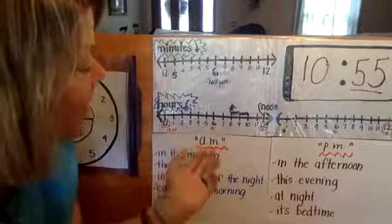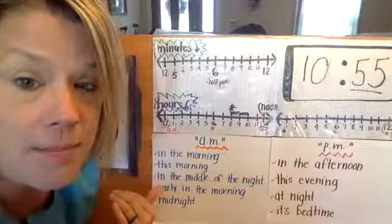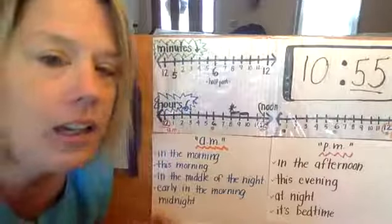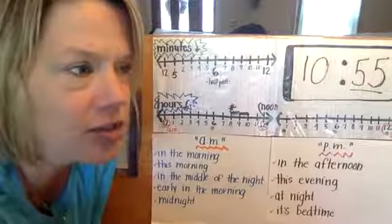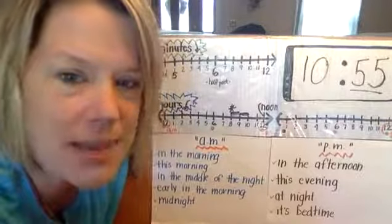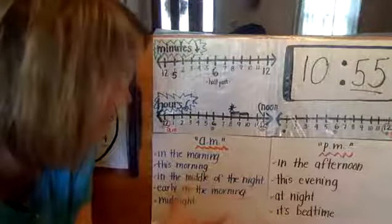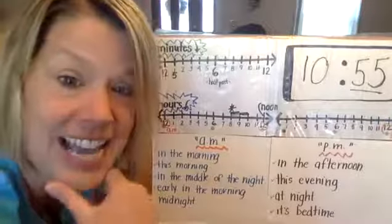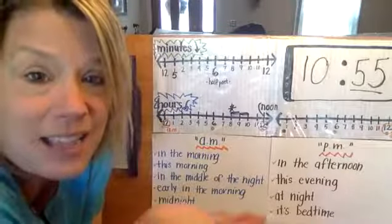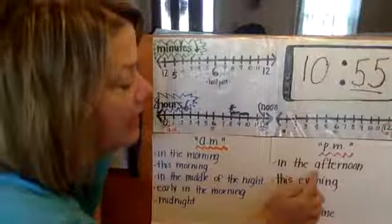So, if we're talking about AM, we might use these phrases. We might say in the morning, this morning, in the middle of the night, early in the morning. Midnight begins the AM hour. These phrases we use for PM: in the afternoon, this evening, at night, and it's bedtime.